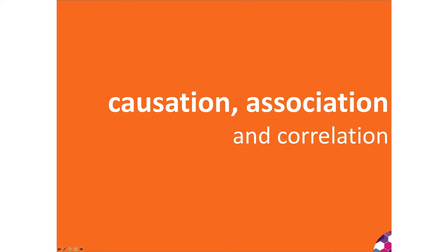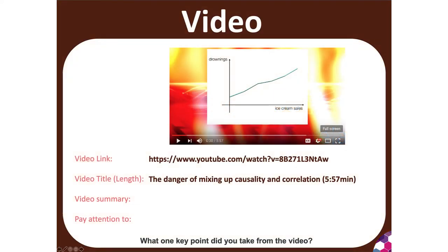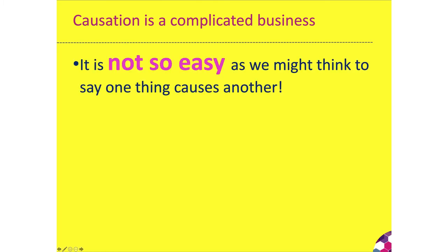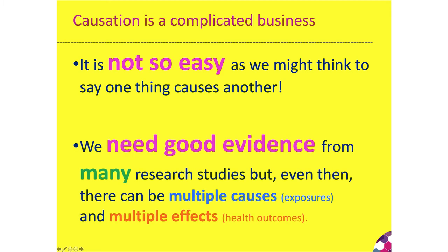Let's start with causation, association and correlation. Please watch this video — it will be in the playlist and you can also find it on YouTube — on the danger of mixing up causality and correlation. Causation is a complicated business. It is not so easy as we might think to say one thing causes another. We need good evidence from many research studies, but even then we have to recognise that there may be multiple causes and multiple effects, so that the chain of causation from exposure to health outcomes can be very complicated.